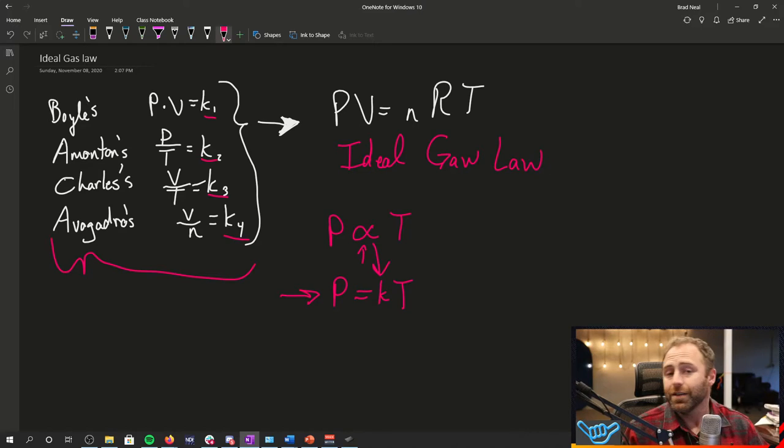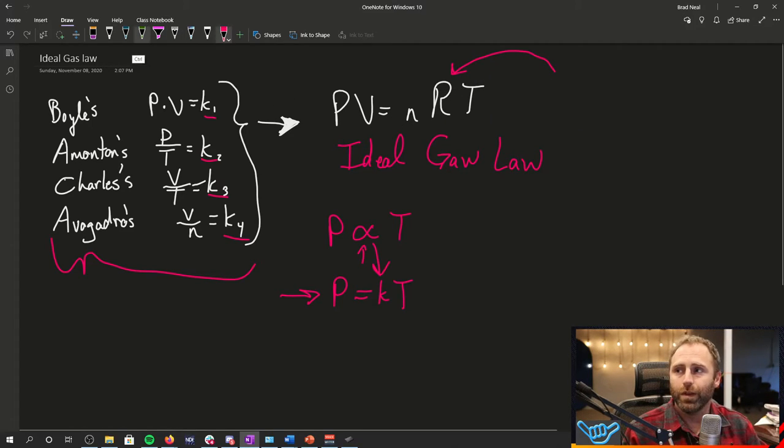And our ideal gas law is really just combining all of these other ideal scenarios that we talked about and saying, okay, instead of having a bunch of individual constants, we have just this one constant right here. And then we talked about in the previous videos how our four things for a gas that we were going to be interested in are pressure, our volume, our number of moles, and our temperature.